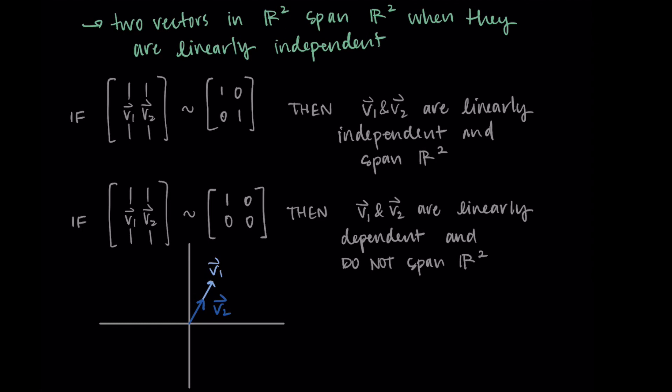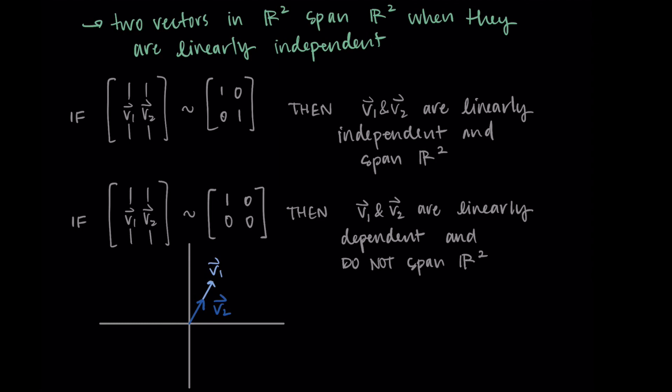So this should make sense. If we have two vectors and they are linearly independent, we basically have two different directions we can go, and with any combination of these two directions we can get to any other place in R2. However, if one of the vectors is a multiple of the other, we really only have one direction we can go and we can't possibly reach all the points in R2.